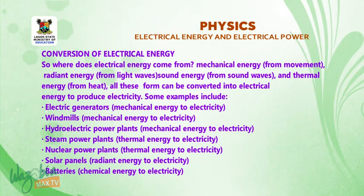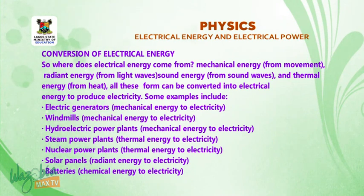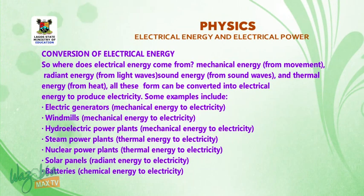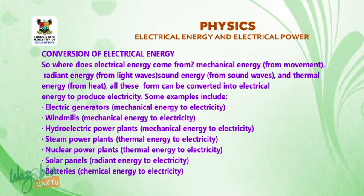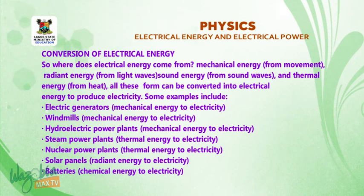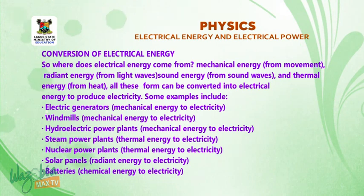Where does electrical energy come from? It comes from mechanical energy (movement), radiant energy from light waves, sound energy from sound waves, and thermal energy from heat. All these forms can be converted into electrical energy. Examples include: electric generators (mechanical to electrical), wind turbines (mechanical to electrical), hydroelectric power plants (mechanical to electrical), geothermal power plants (thermal to electrical), nuclear power plants (thermal to electrical), solar panels (radiant to electrical), and batteries (chemical to electrical).